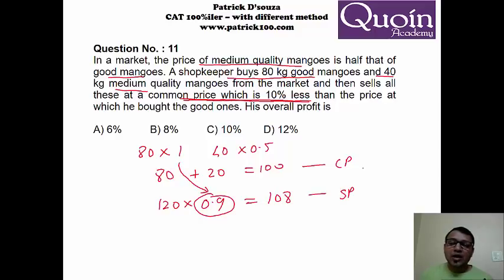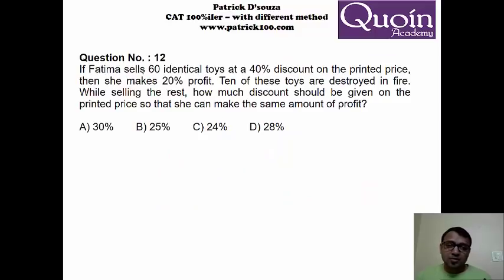Because in the end we want the price of good mangoes reduced by 10%, reducing the price from 1 becomes easier. In which case the medium mangoes will be 40 into 0.5. So total price becomes 80 plus 20 which is 100. Now this is the cost price. Now when I'm selling, I will sell all the 120 mangoes at 10% less. 90 into 12 is 108. So this is the selling price. And you can directly make out that profit is 8%.